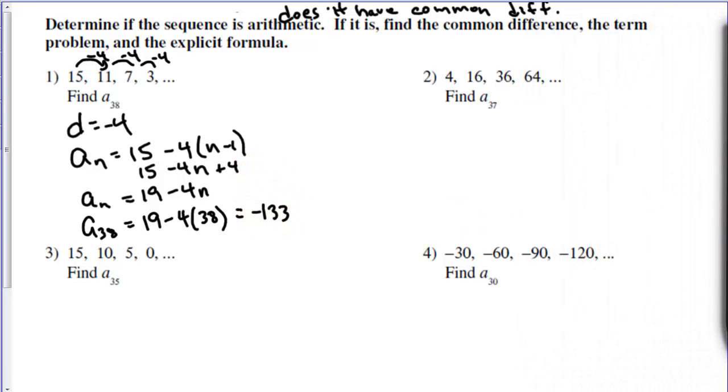Let's look at example 2. Going from 4 to 16, we're adding 12. And going from 16 to 36, we're adding 20. So this is not a common difference. Therefore, this is not an arithmetic sequence. Now there is probably some pattern here that we could find, but we're not going to worry about that in this lesson.